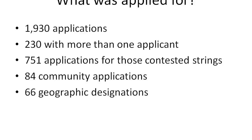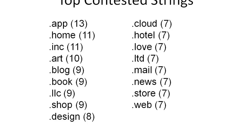As a result, there are 1,930 applications for new top-level domains. There are 230 of them that have more than one applicant, and there are 751 applications for those 230 domains. There are 84 self-designated as a community, and 66 geographic designations, such as .Brazil. The most contested: there are 13 separate applications for .App, 11 for .Home, 11 for .Inc, 7 for .Mail, and 7 for .Web.